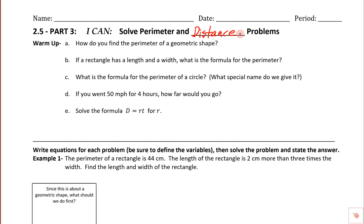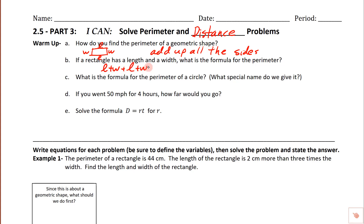How do you find the perimeter of a geometric shape? If we had a rectangle, the perimeter is the distance around the outside, so we add up all the sides. If a rectangle has a length and a width, we'd have L plus W plus L plus W. The simplest way to write that is two times L plus two times W — the perimeter equals two lengths plus two widths.